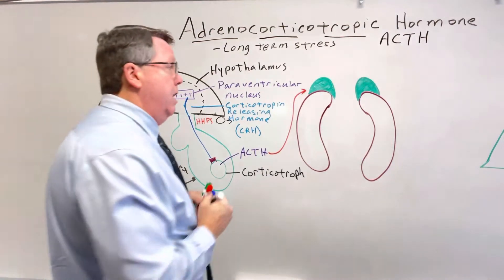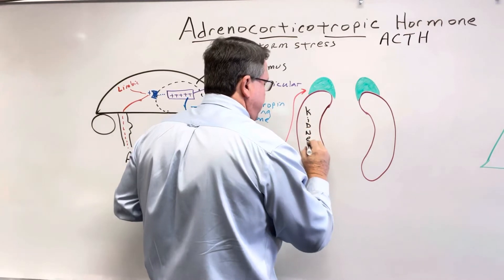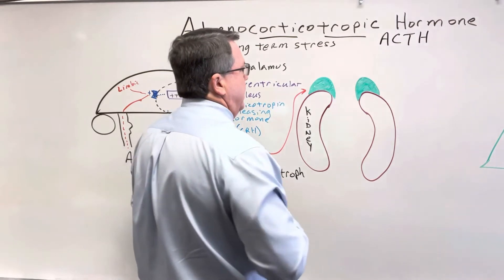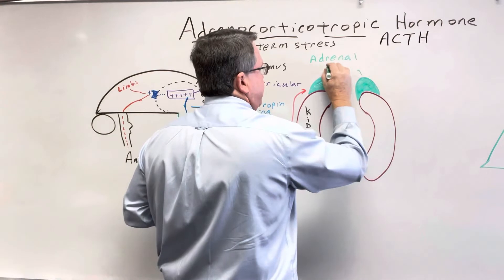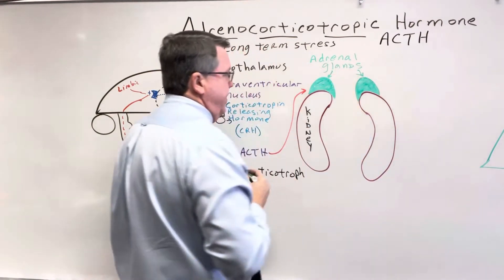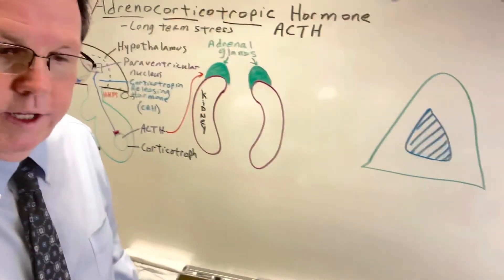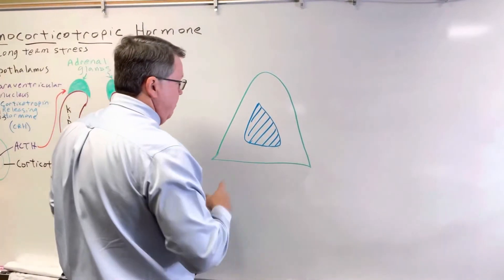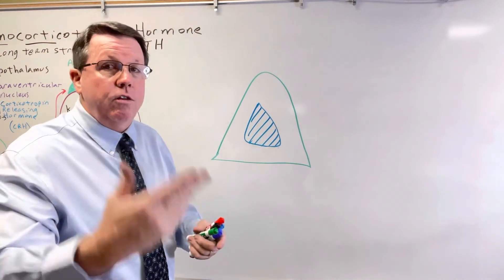So if we look at these — these are my kidneys — my adrenal gland is going to sit on top of my kidneys. So these are the adrenal glands; you have two of them, one on top of each kidney. Now, we said that ACTH is released in response to long-term stress, so let's also look at short-term stress real quick.